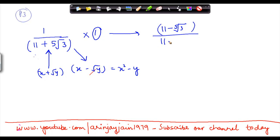1 can be written as 11 minus 5 under root 3 divided by 11 minus 5 under root 3. Now what do I achieve? Now I have got this equation up and running. So what's the conclusion? Here x is equal to 11 and y is equal to 5 under root 3.